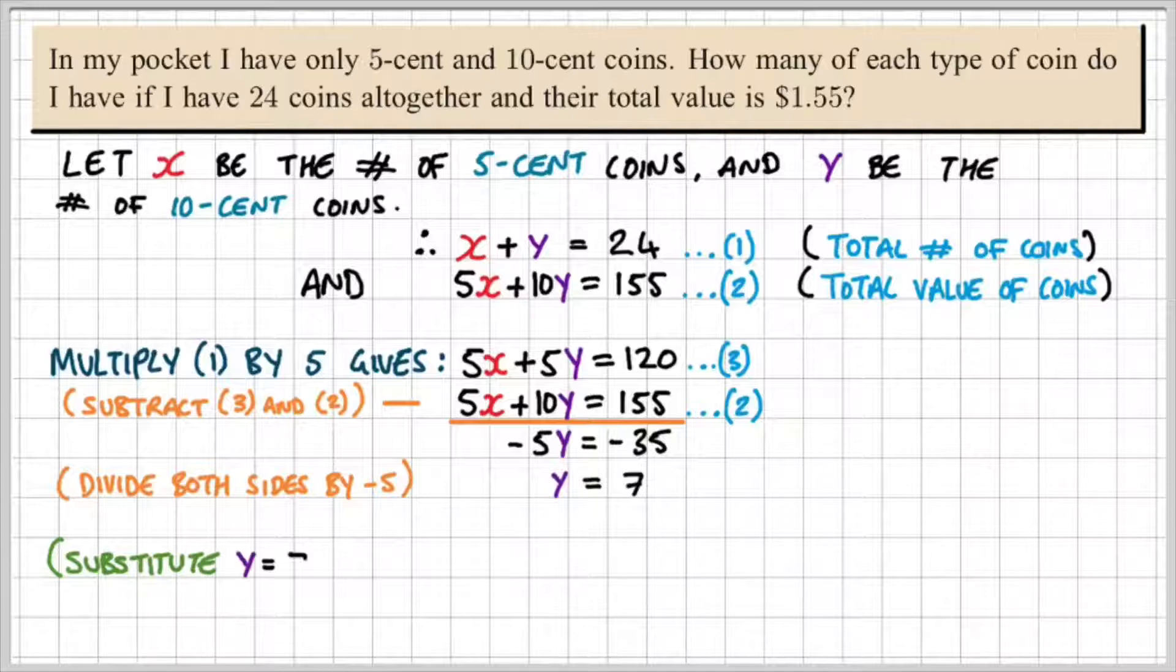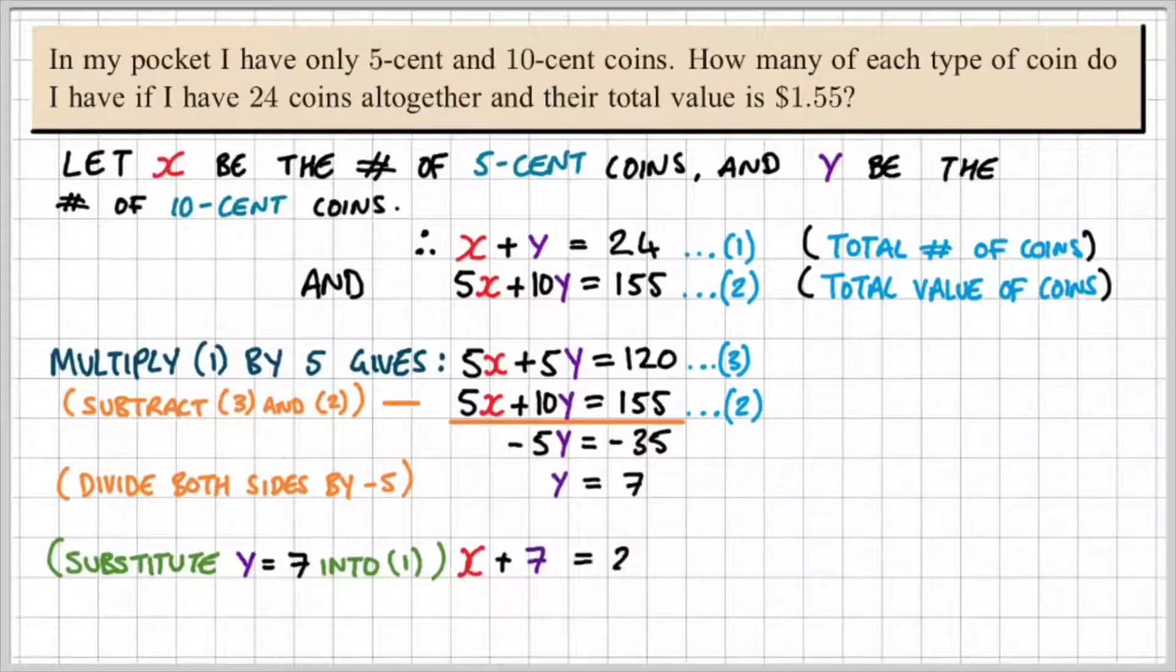Now our next step is to substitute y is equal to 7 into equation 1. This is going to help us to find the value of x. So we have x plus 7 is equal to 24. If I subtract 7 on both sides, I'll get x is equal to 17.